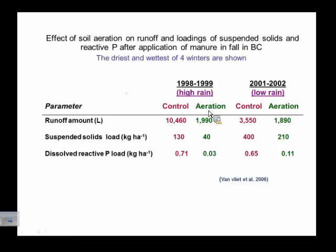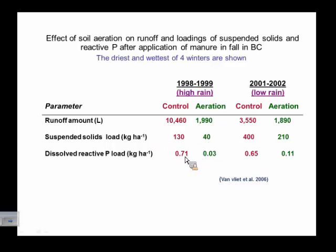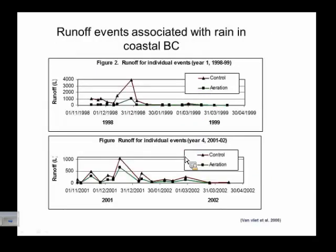Dan mentioned runoff, and I'll mention it briefly too. You can't ignore the fact that if you have a slow field, runoff is an issue. Runoff values we measured in a high rainfall year versus a low rainfall year show, as expected, more runoff in a high rainfall year. However, we found that aeration of the field going across the slope consistently over four years did reduce the amount of total runoff and the runoff of nutrients. The key factor is how much rain you get in the days and weeks that follow manure application in the fall.